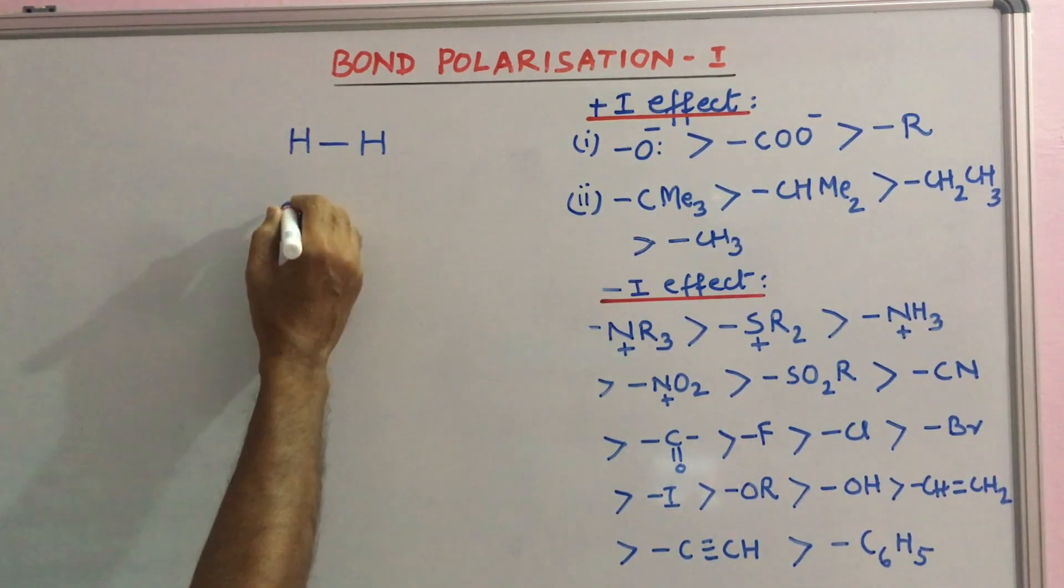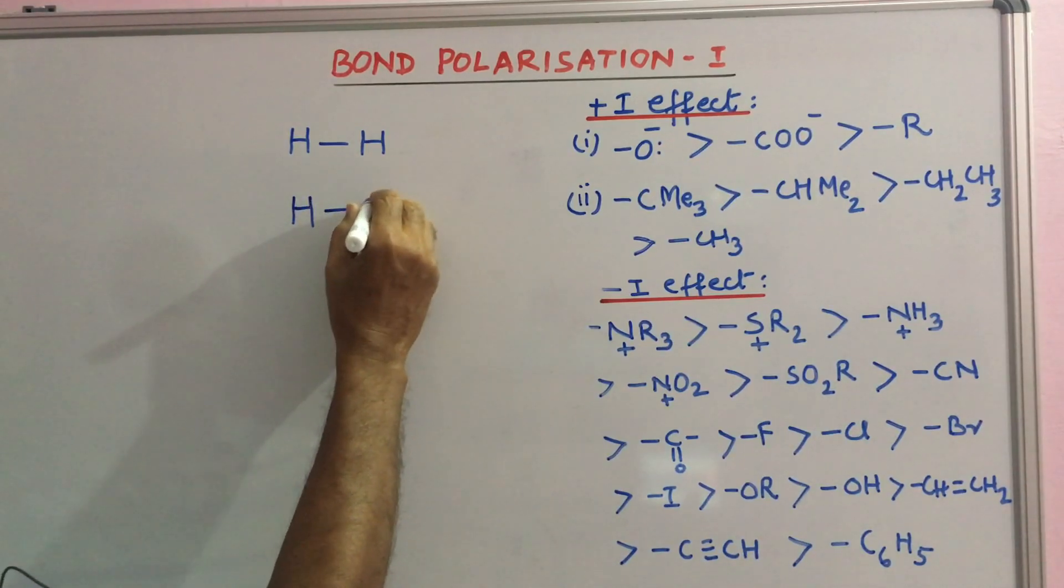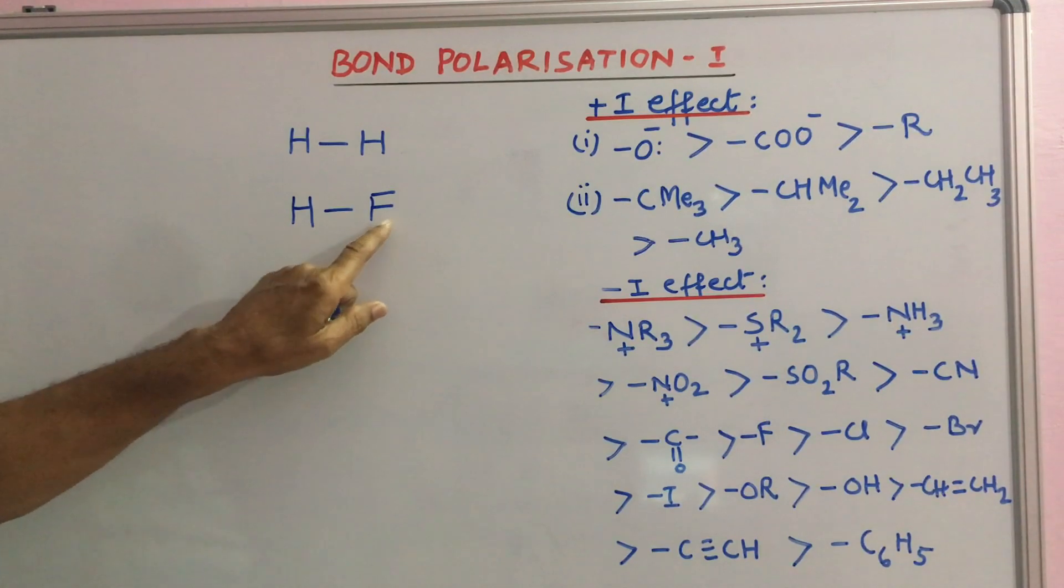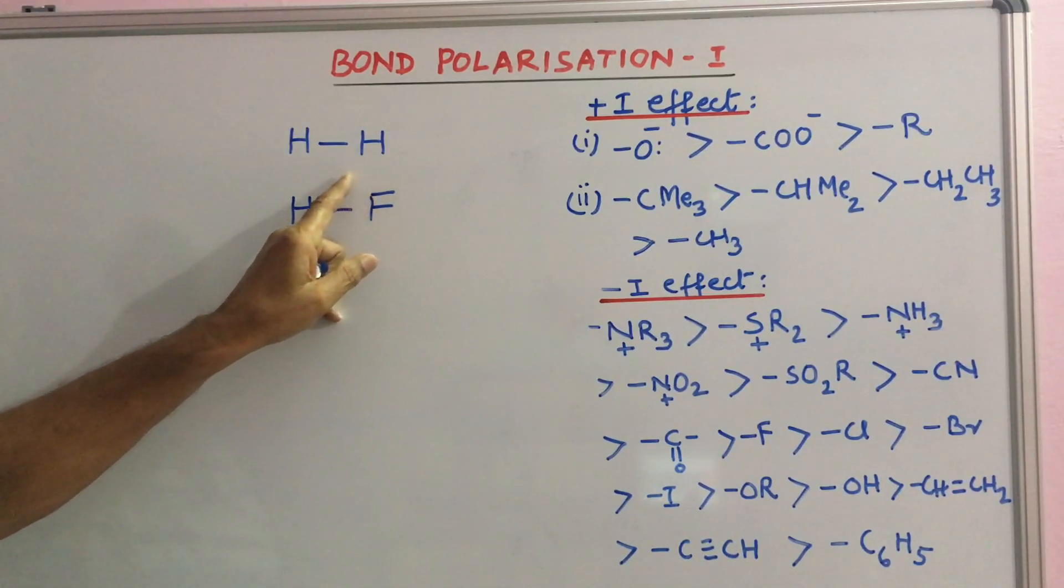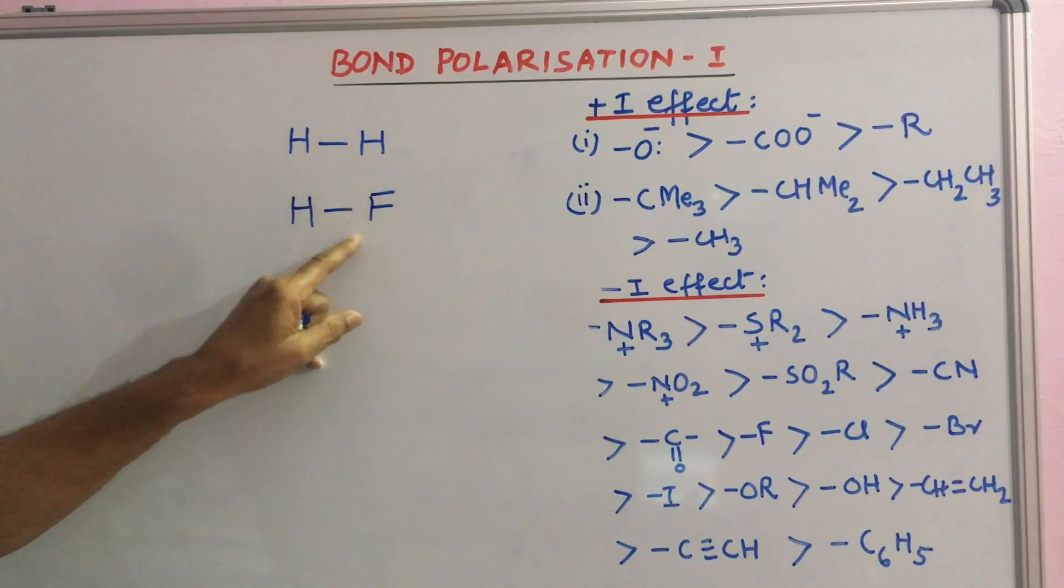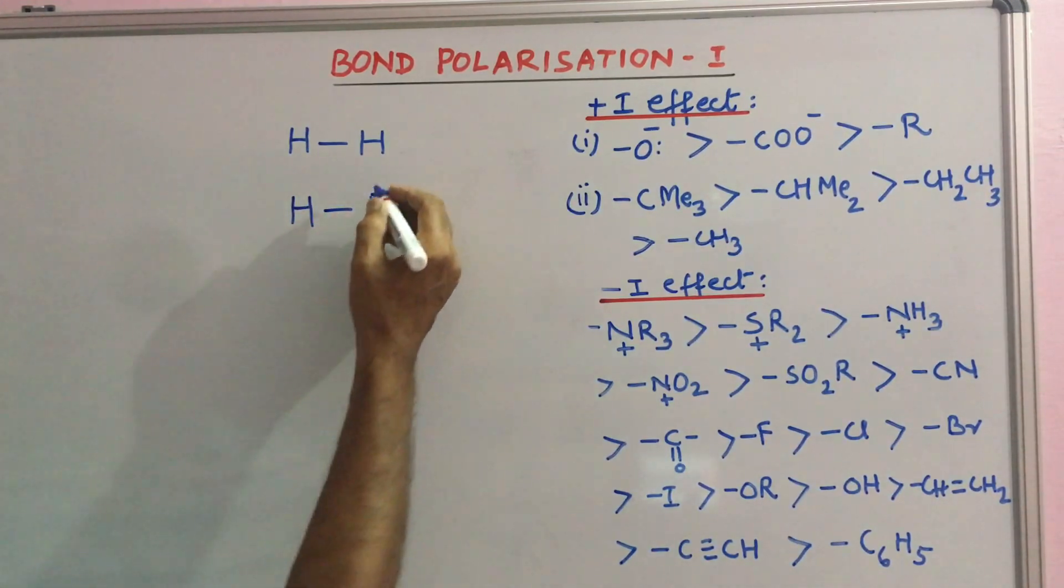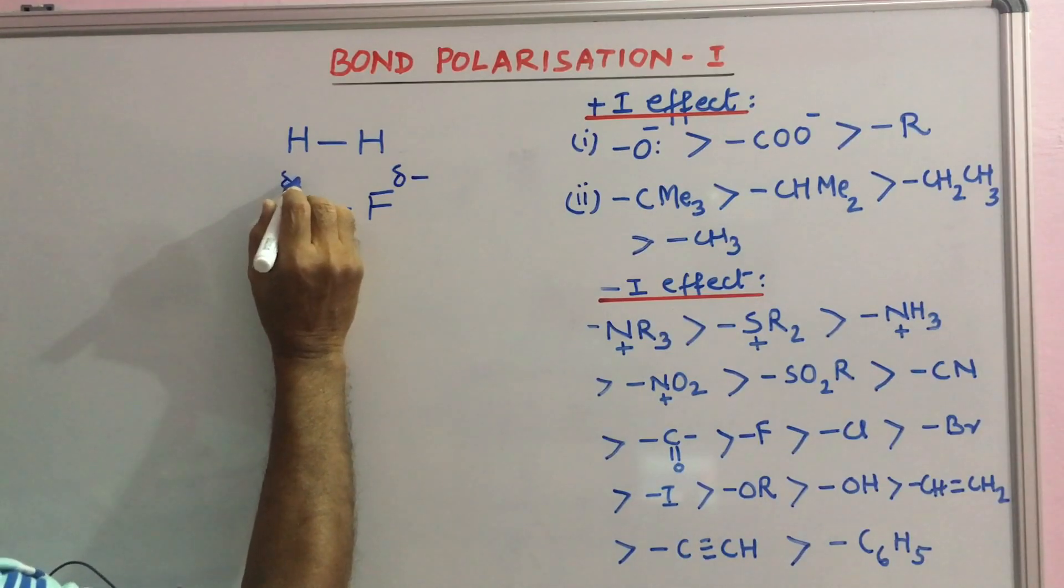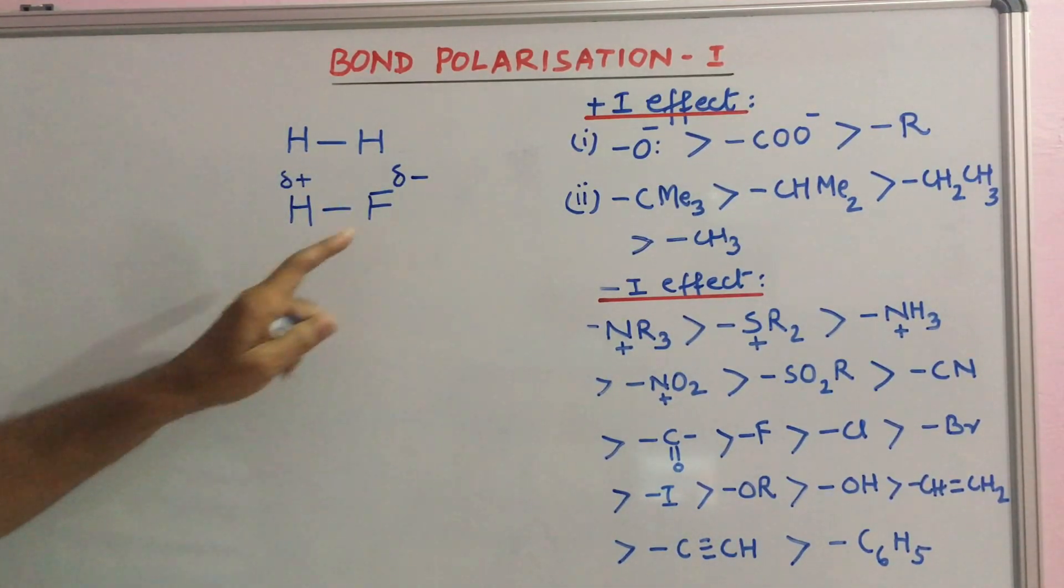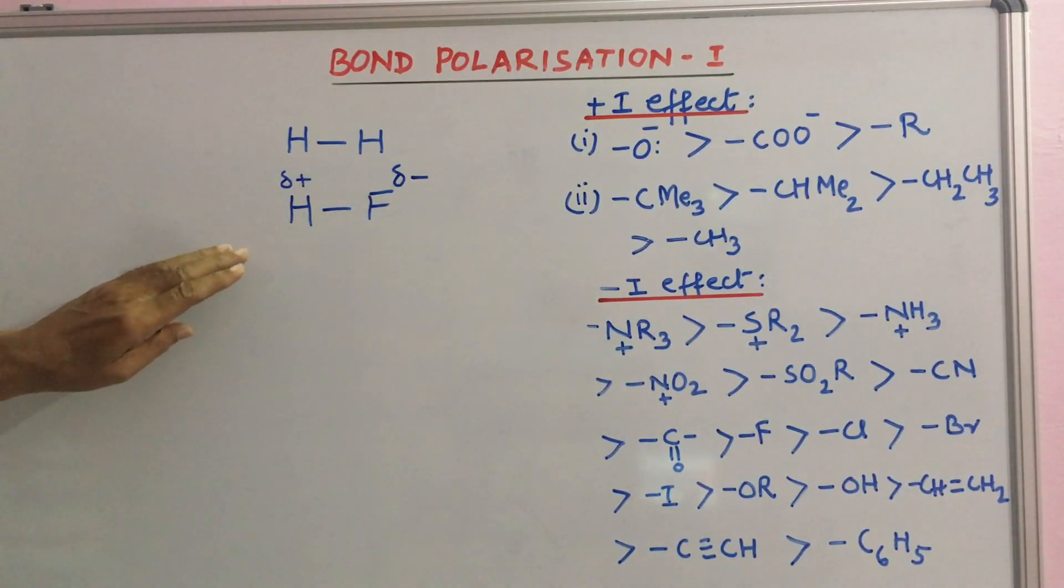But if they are of different electronegativities, the bonding electron pair is shared in such a way that F has a greater portion of it. We represent this by saying that F acquires a small negative charge and H a small positive charge denoted by delta. This is known as polarization development of two charges. This is a polar molecule.